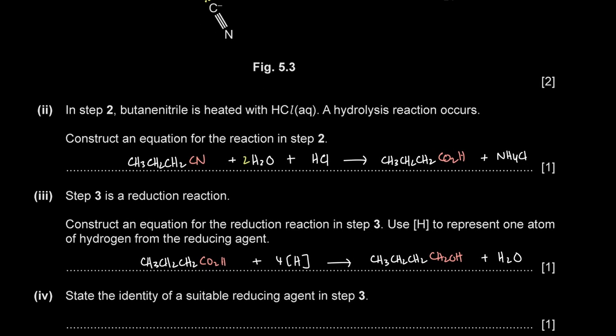State a suitable reducing agent for step 3. To reduce a carboxylic acid to a primary alcohol, we must use lithium aluminium hydride (LiAlH₄) in dry ether (anhydrous conditions). You must state LiAlH₄ and specify that it is anhydrous.